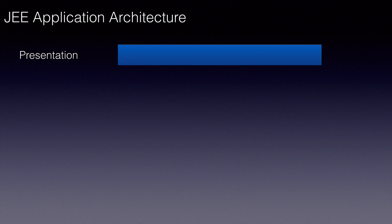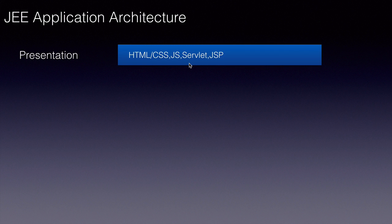Any Java EE application can be broken down into multiple logical layers starting with the presentation layer. These layers help us organize our code logically. The presentation layer is where we use HTML, CSS, JavaScript, Servlets and JSPs from the Java EE world, and also the Java Server Faces standard to develop beautiful UIs. If we want to use something from the Spring framework world, we use the Spring MVC module to create the presentation layer.